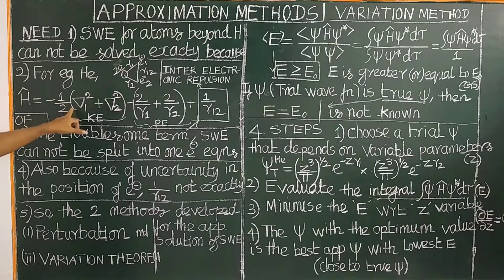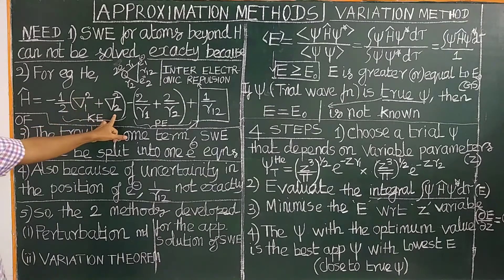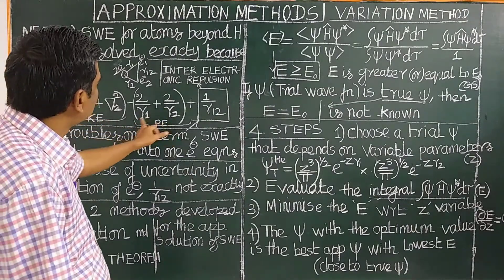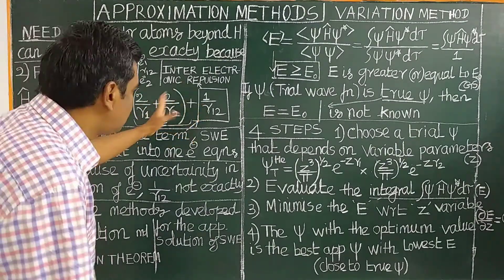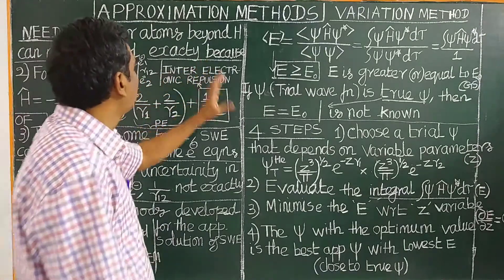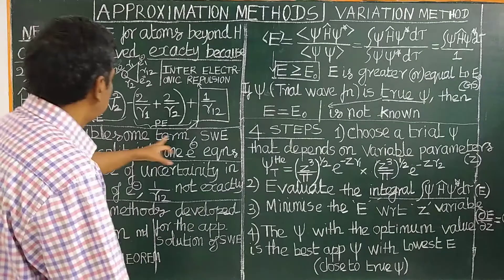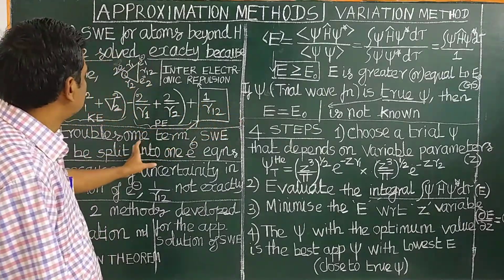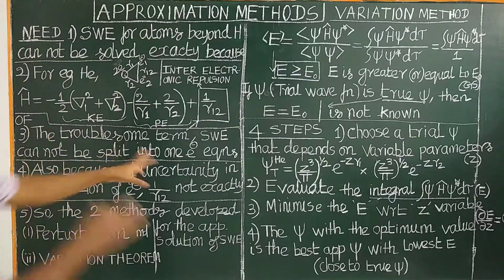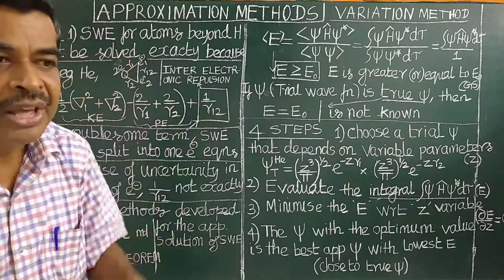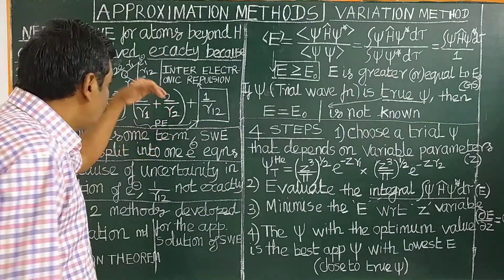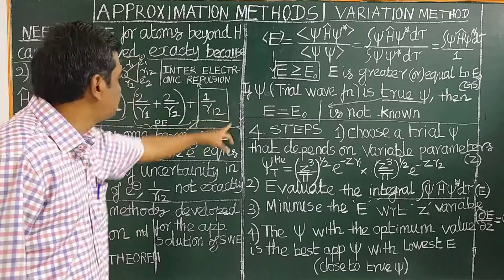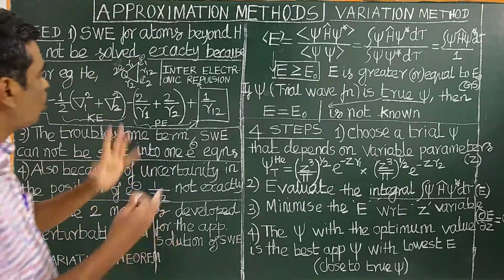Therefore, H-cap equals — the first two terms are the kinetic energy terms for electron 1 and electron 2. The third and fourth terms correspond to the potential energy for electron 1 and electron 2. In addition to this, there is an inter-electronic repulsion term. This is called the perturbation term, also called the troublesome term. Because of this term, the Schrödinger wave equation cannot be solved exactly; it cannot be split into two one-electron equations.